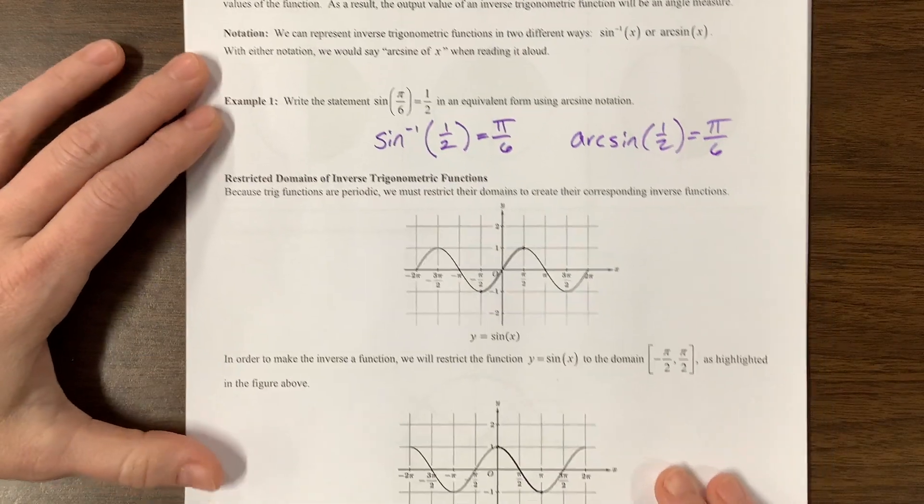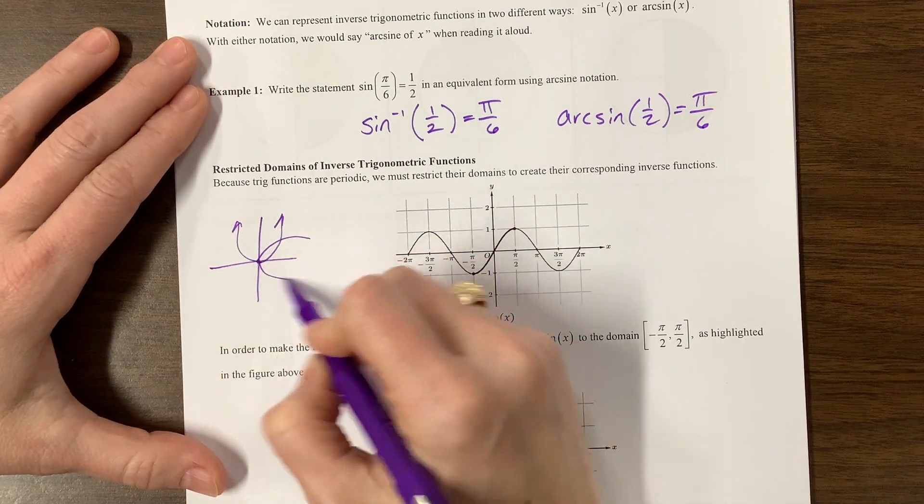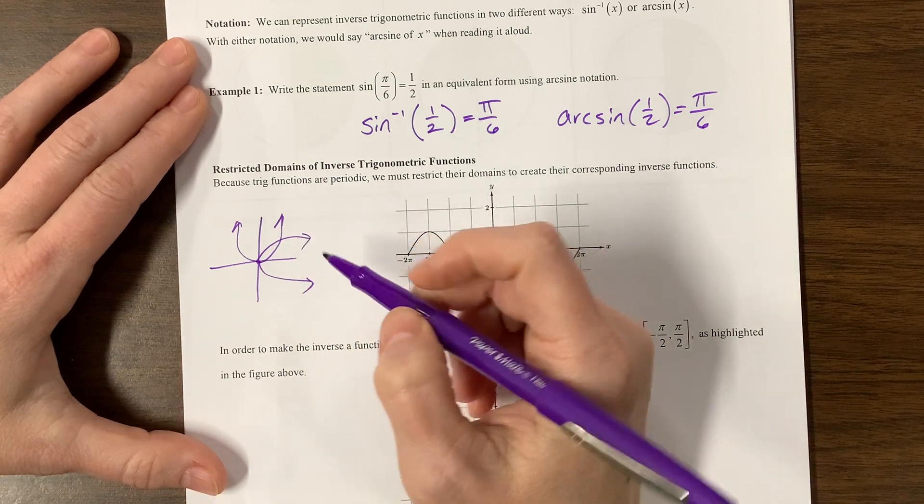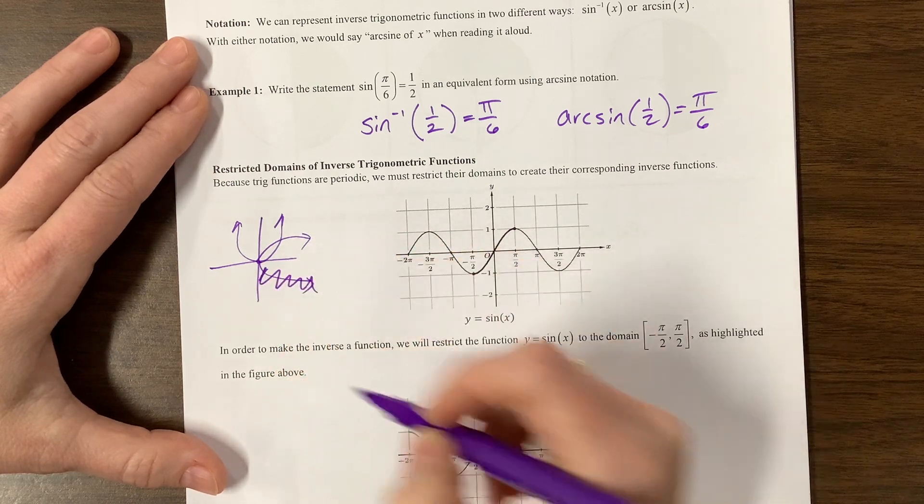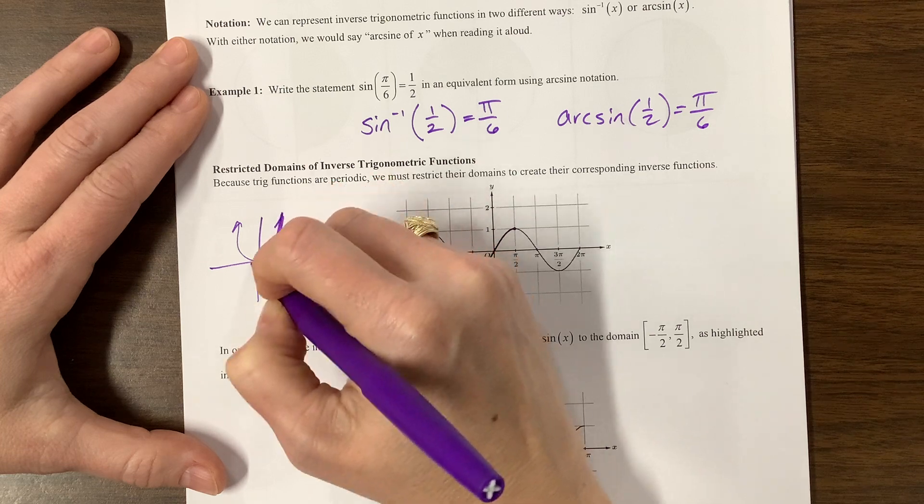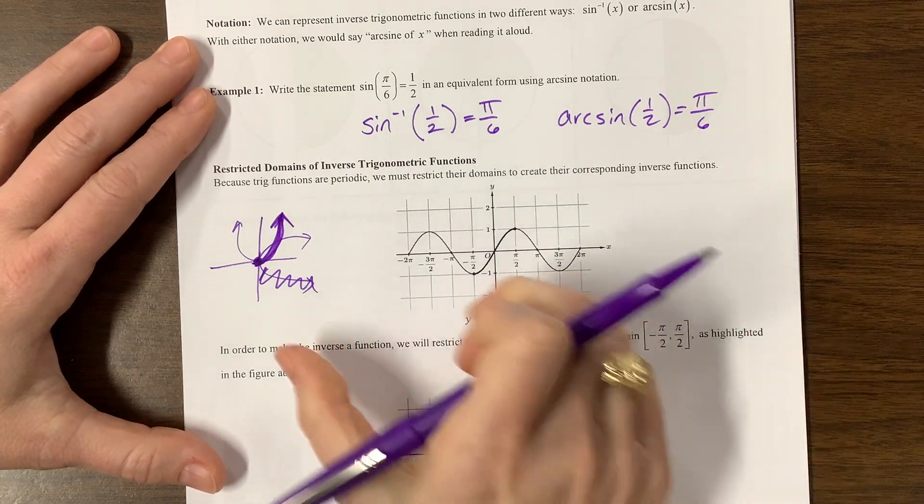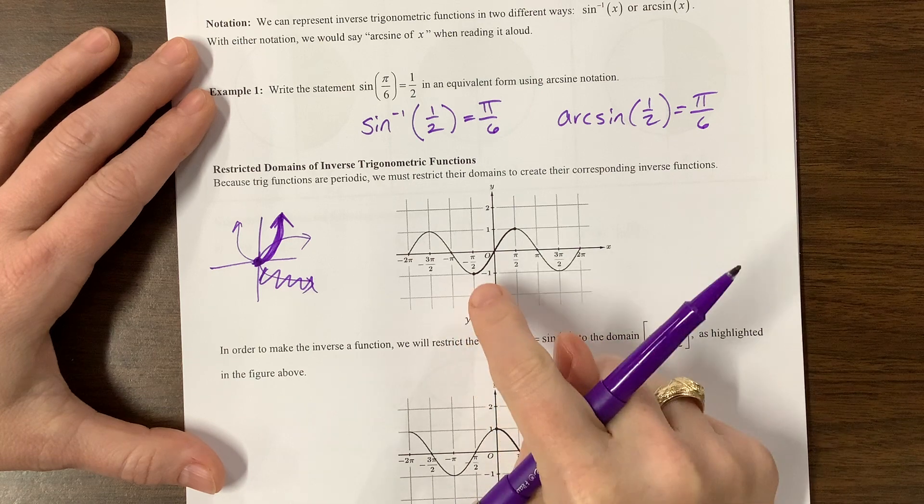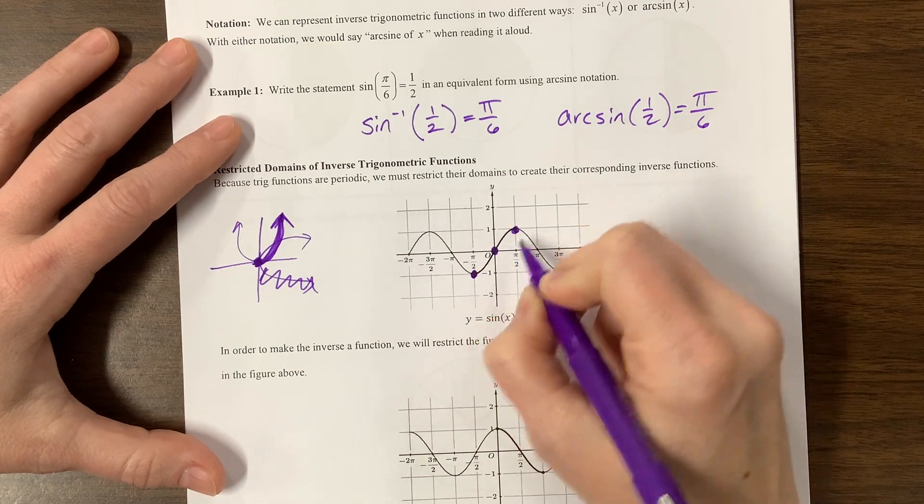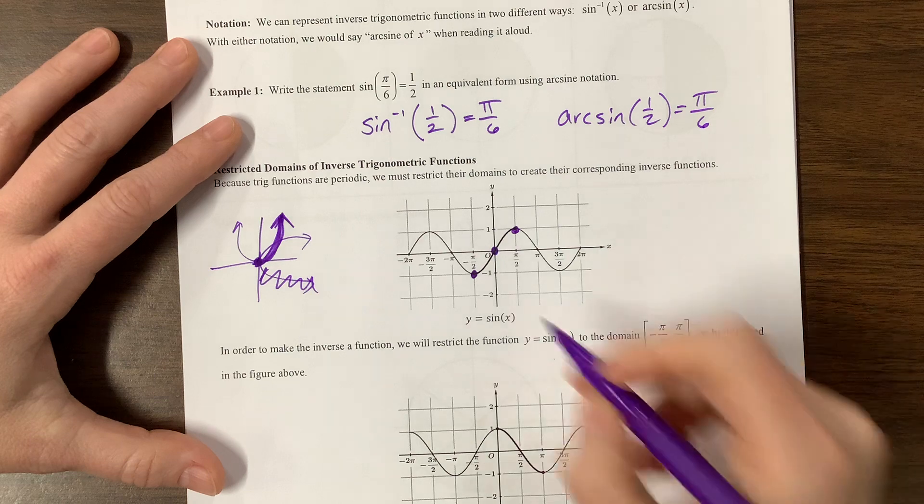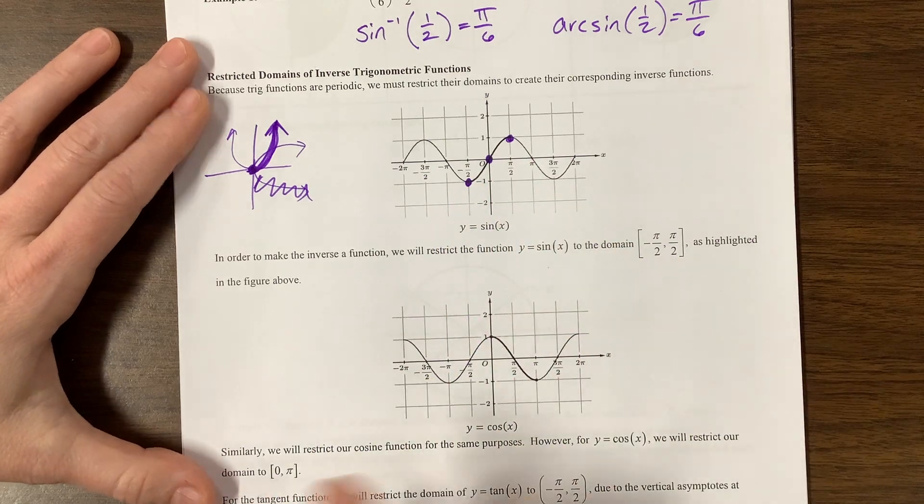And so we talked about how if you have something like y equals x squared and you go to take its inverse, you end up getting something like this, and these two pieces right here are the inverse of our original function, but this is not a function unless we get rid of part of it. So what we have to do is we restrict the domain and just keep this part of the parabola. Same exact idea with trig. So what we need is we need a piece of the sine curve where we get every y value exactly once. And it's really nice to work with 0, 0. And so therefore, we can go from negative pi over 2 to pi over 2 is how we restrict our domain. So in order to make the inverse a function, we will restrict the function to the domain negative pi over 2 to pi over 2, as highlighted in the figure above.